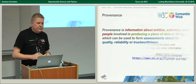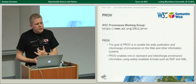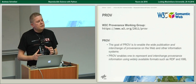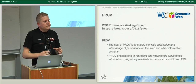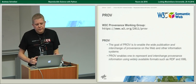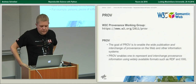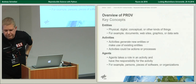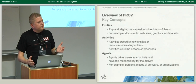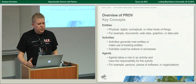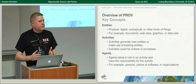The W3C Working Group came up with a standard called PROV — a standard data format for storing provenance information for data and information in different formats. The key concept of this standard is that you have entities — the first term — which is a physical thing or a digital thing like a file.